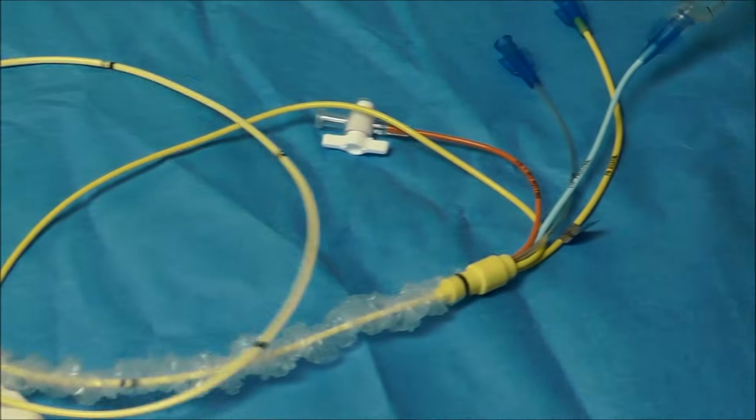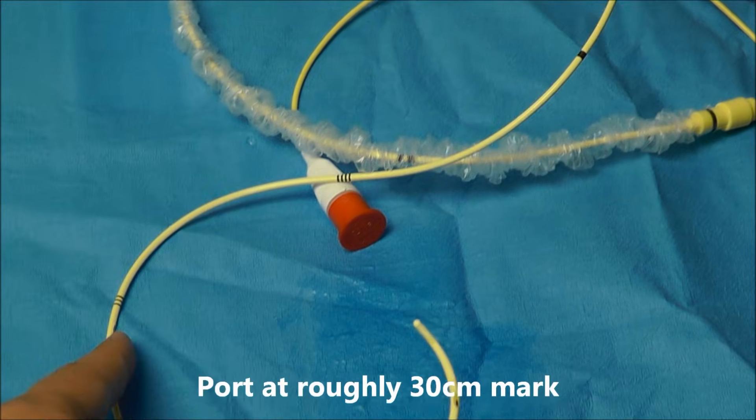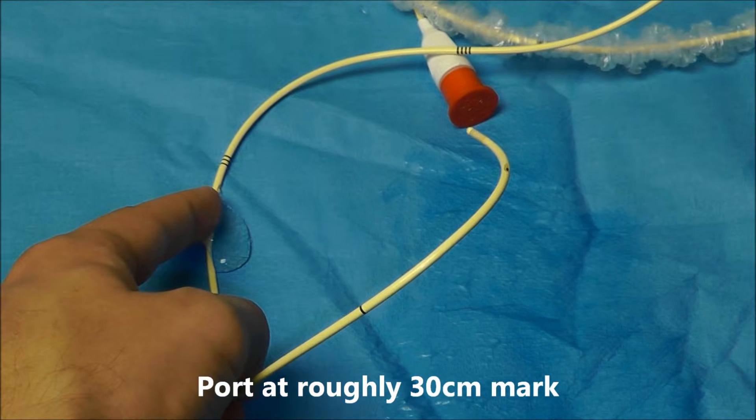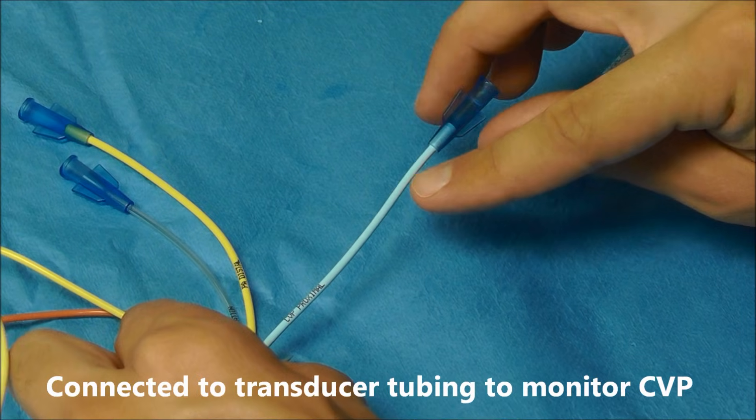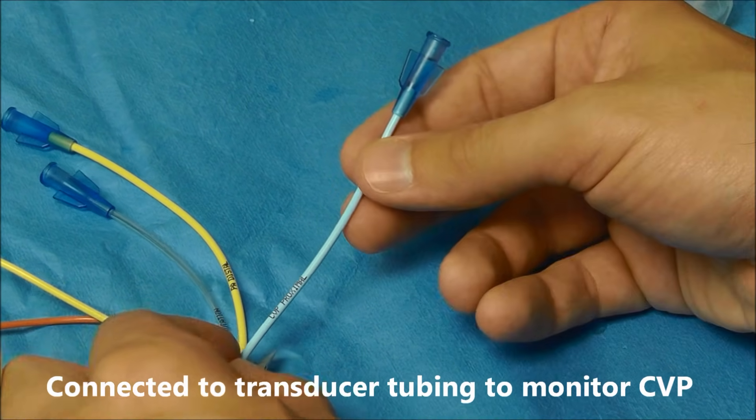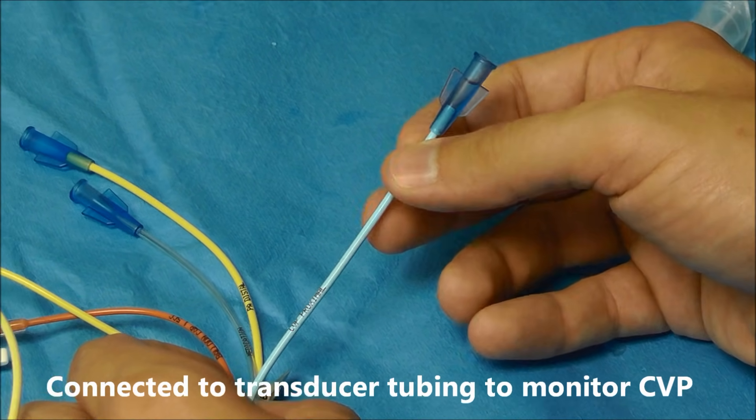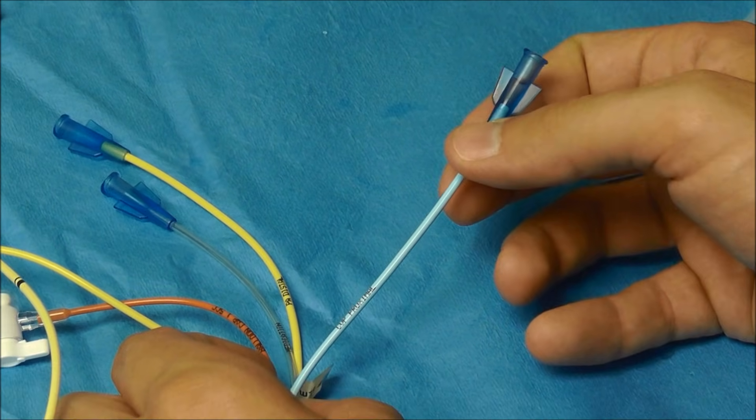And if you follow it all the way over here, you're going to notice that saline comes out of that port right there. We connect transducer tubing to this blue port here. And we use that to monitor central venous pressure.